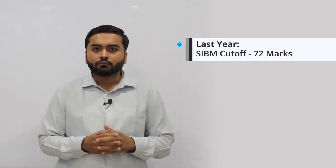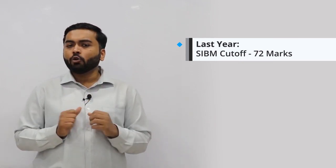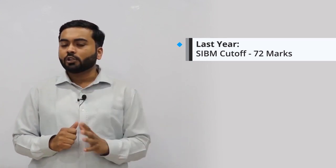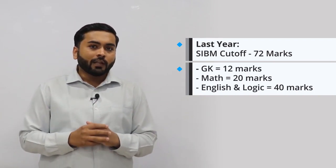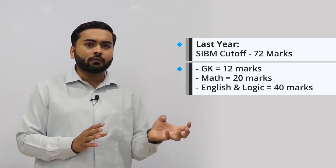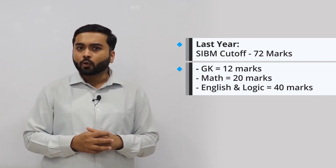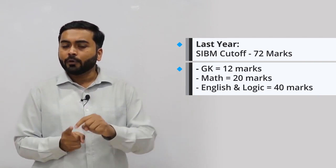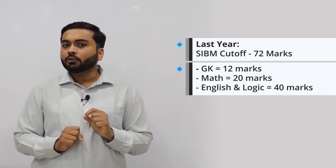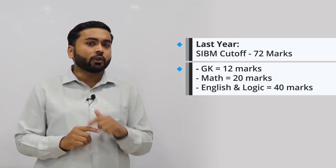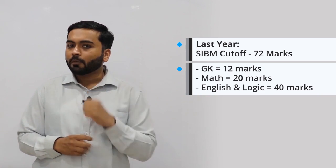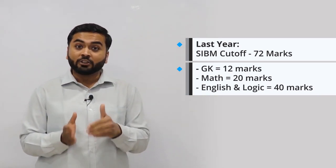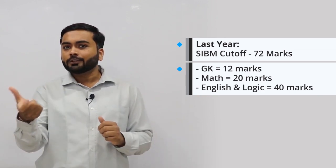If you look at last year's cutoff of SIBM, it was around 72 marks. Let us assume that out of the 72 marks, a student scored around 12 marks in GK, which means he or she scored 60 marks in other three sections. Let's assume that out of 60 marks, he or she scored 20 marks in maths section and 40 marks in English and logic put together. Now if the difficulty of the paper is going to remain the same as it was last year, out of the 40 marks that a student scored last year in English and LR, now he will be scoring 60 marks because each question is for 1.5 marks. He will still score those 20 marks which he scored last year, so it will be 60 plus 20, that adds up to 80.